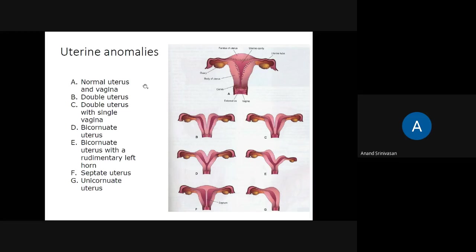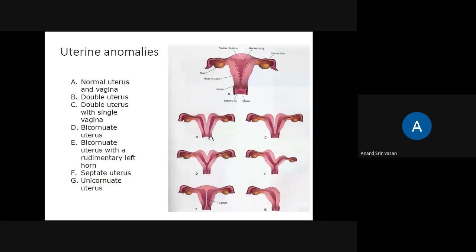Now let's see the anomalies. The two paramesonephric ducts unite to form the uterus — if they do not unite, a double uterus forms. If there is completely no union, there will be two vaginas in the upper one-third as well as two uteri. If only the caudal portion is united but not the cranial portion, there will be a double uterus with a single vagina.